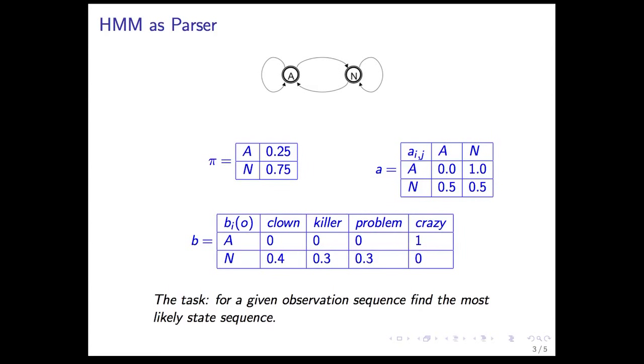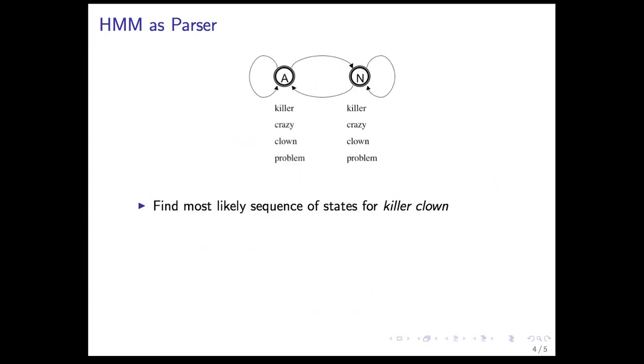And we're going to use this table in order to find, for a given observation sequence, the most likely state sequence. Because one of them is going to be more likely than others. So let's take a very simple input observation sequence. So for this finite state machine, let's say we wanted to analyze this very important sequence, killer clown.